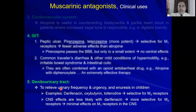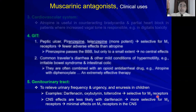On the urinary tract: atropine-like drugs relieve urinary frequency, urgency, and enuresis in children. For nocturnal enuresis and urgency we need drugs that block acetylcholine from activating the urinary bladder and relaxing the sphincters. These drugs include darifenacin, oxybutynin, and tolterodine, which are selective for M3 receptors. M3 receptors control glandular and smooth muscle. Darifenacin is the most selective, followed by oxybutynin; tolterodine is somewhat M3-selective. CNS effects are less likely with darifenacin since it minimally affects M1 receptors in the CNS, making all three much preferred over atropine for this use.